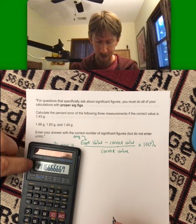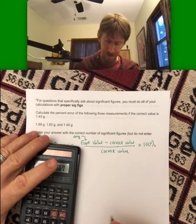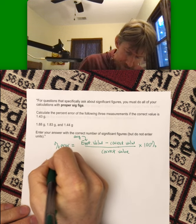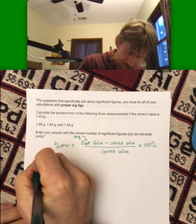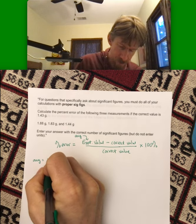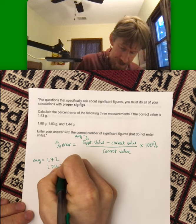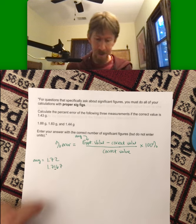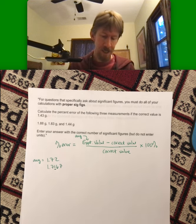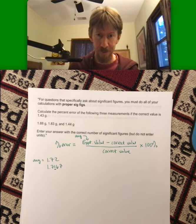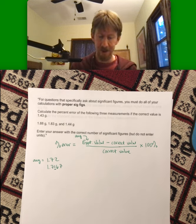You could also keep 1.71667 and underline the 1 just to make sure you know there's three sig figs. Either of these will work for this and any problem that you do in this class.